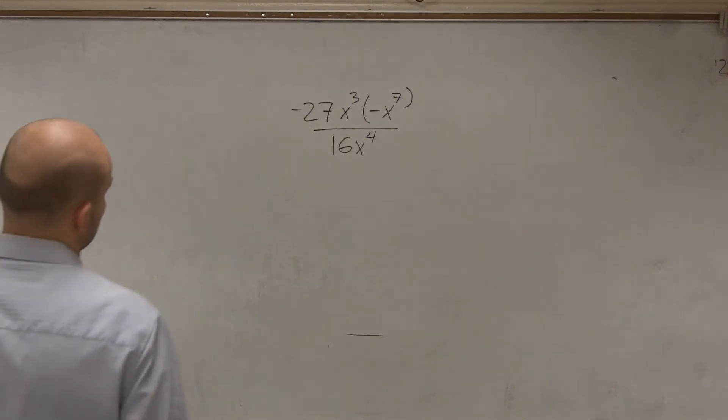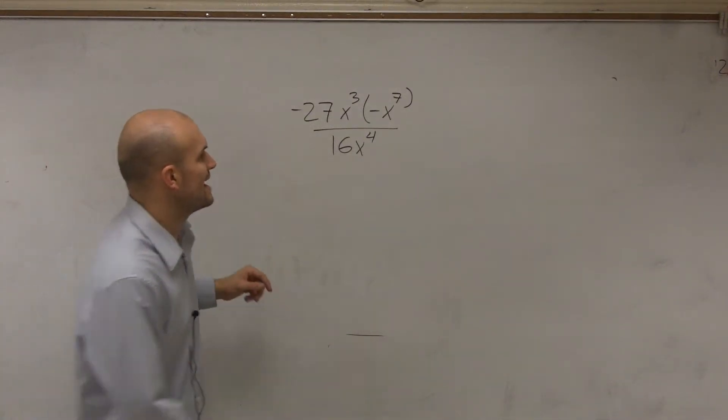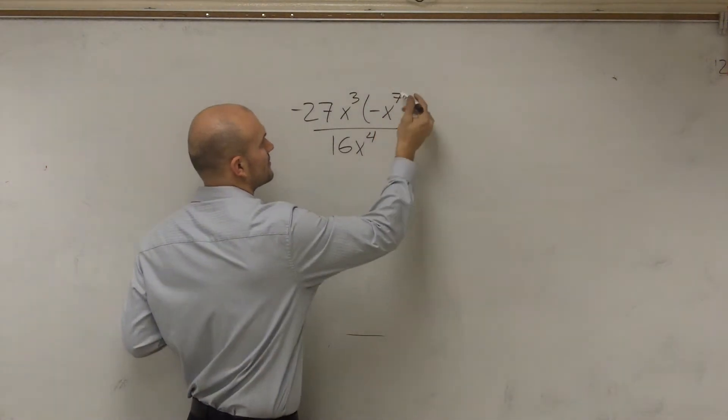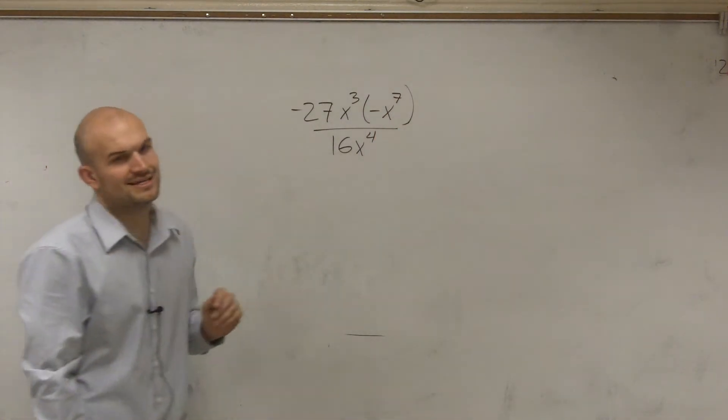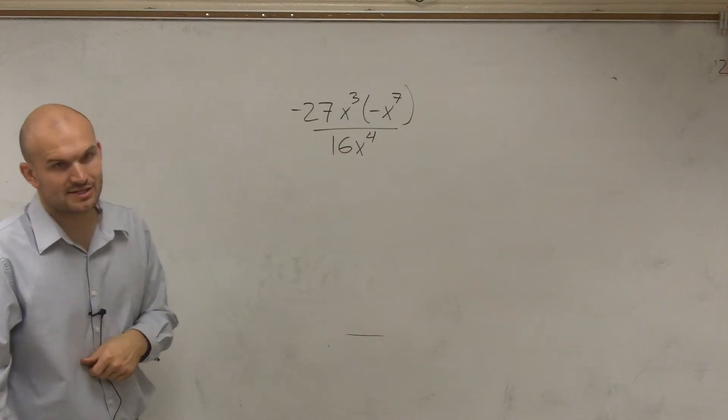So for this problem, what we're going to do is negative 27x cubed times, that's a weird parentheses, negative x to the seventh and then divided by 16x to the fourth.